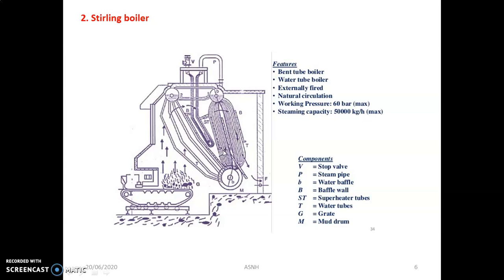The Sterling boiler consists of a number of mountings like pressure gauge, safety valves, water level indicator, and fusible plug. It also consists of accessories like economizer, superheater, and air preheater. A number of pumps are also used. The main function of the baffle is to restrict flow in that portion. Water continuously flows and circulates through the tubes while the rest portion is covered by flue gases.